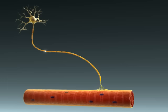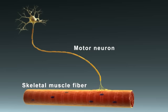An action potential propagates down a motor neuron to a skeletal muscle fiber.